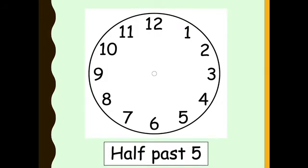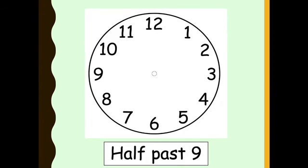Next one is half past 5 — have a go at this one. Where do you think the big hand is going to go? Well done if you said it goes on number 6. Remember, half past is just half of 12. The big hand goes on number 12 if it's o'clock, but if it's half past, 30 minutes has gone forward. So it should look something like this for half past 5. The next one is half past 9 — big hand goes on number 6 and the small hand has just gone past number 9.